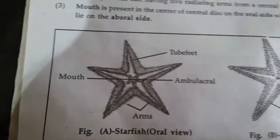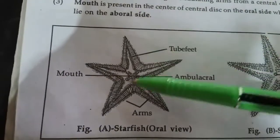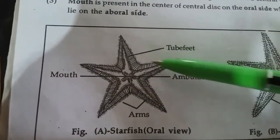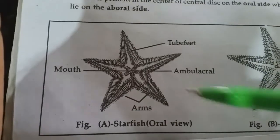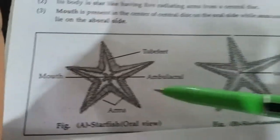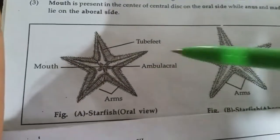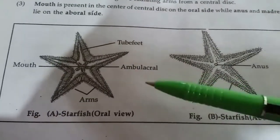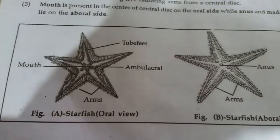So you can see the mouth of the starfish, the tube feet, and the five radiating arms. This is the starfish diagrammatically.